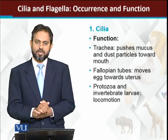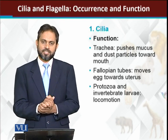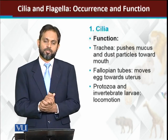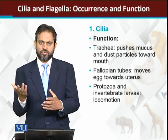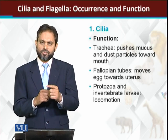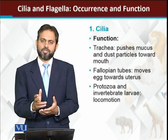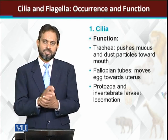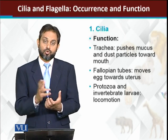In protozoa and larvae of invertebrates, the basic function of cilia is locomotion. The paramecium moves very fast, and this movement is basically due to the cilia. Similarly, the movement of invertebrate larvae is also due to the cilia.